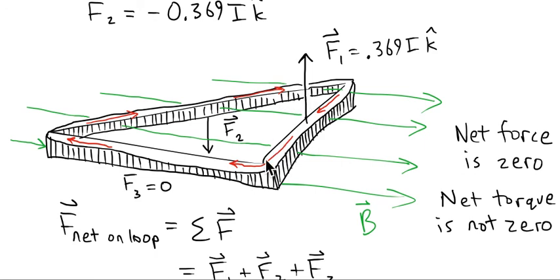So as a whole the loop doesn't want to go anywhere translationally, but it would want to rotate in this field.